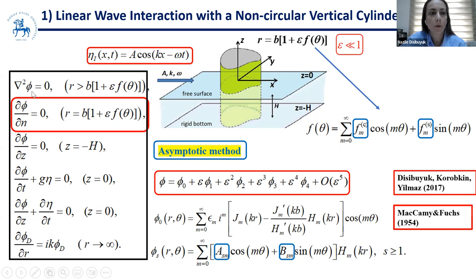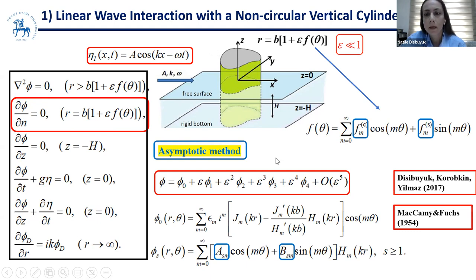The flow is described by the velocity potential phi, which satisfies Laplace's equation outside the cylinder. The body boundary condition is given on the surface of the cylinder, along with the bottom boundary condition, dynamic and kinematic boundary conditions, and the radiation condition at infinity — meaning the diffracted waves are outgoing. We solved this problem by an asymptotic method in 2017.